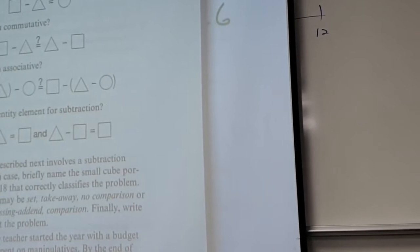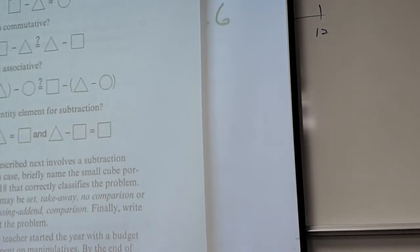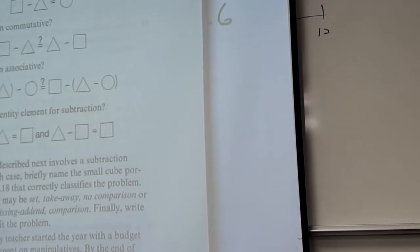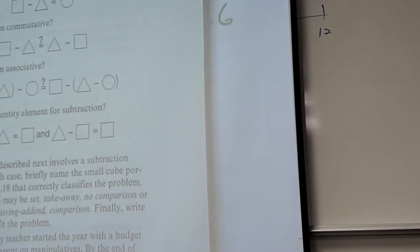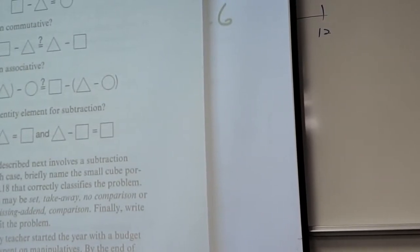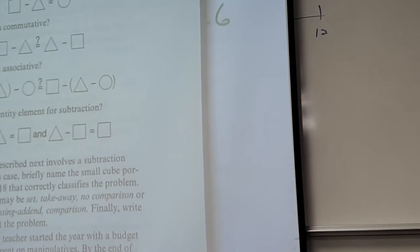In algebra, variables tell us where to put certain numbers — we find x, we put the x value there, we find y, we put the y value there. Here, you find the triangle value and put it there. Same idea.